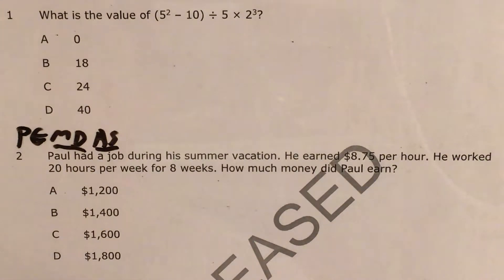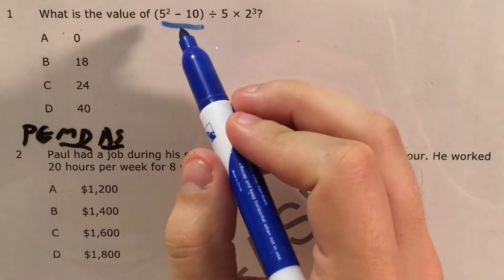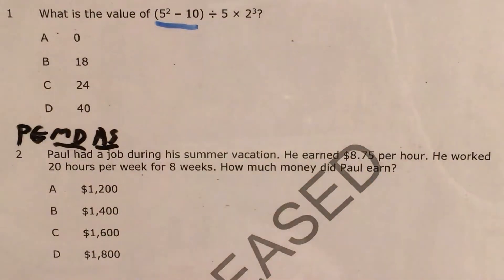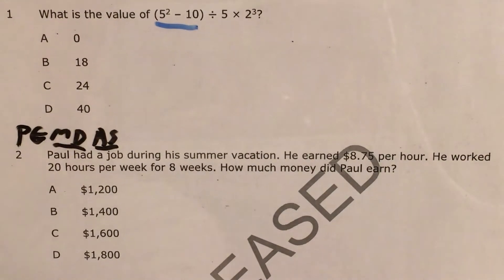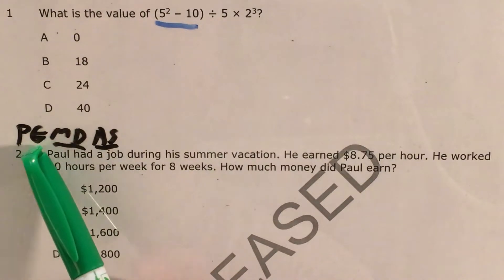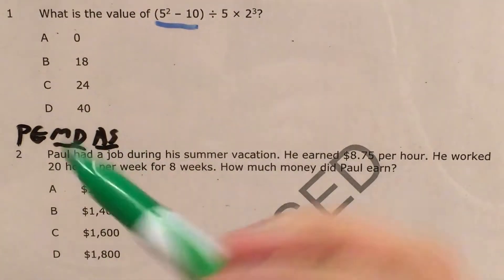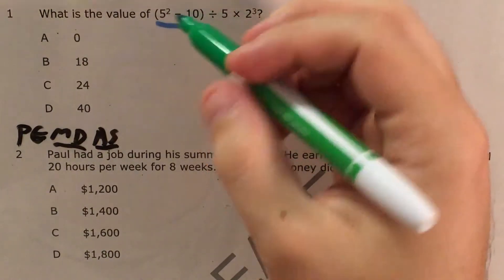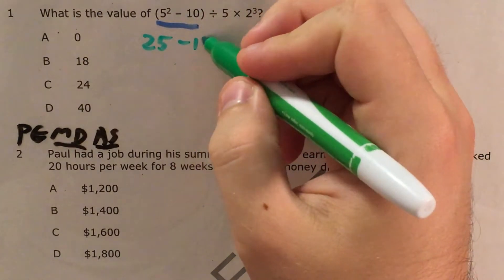To start, I'm going to look for a set of parentheses, and I have one right here. I need to figure out what this set of parentheses equals, and to do that I need to do a miniature order of operations inside the parentheses. So I'm going to start with 5 squared because that has an exponent — I need to figure that out before I can do my subtracting. 5 squared gives me 25, so it's 25 minus 10.